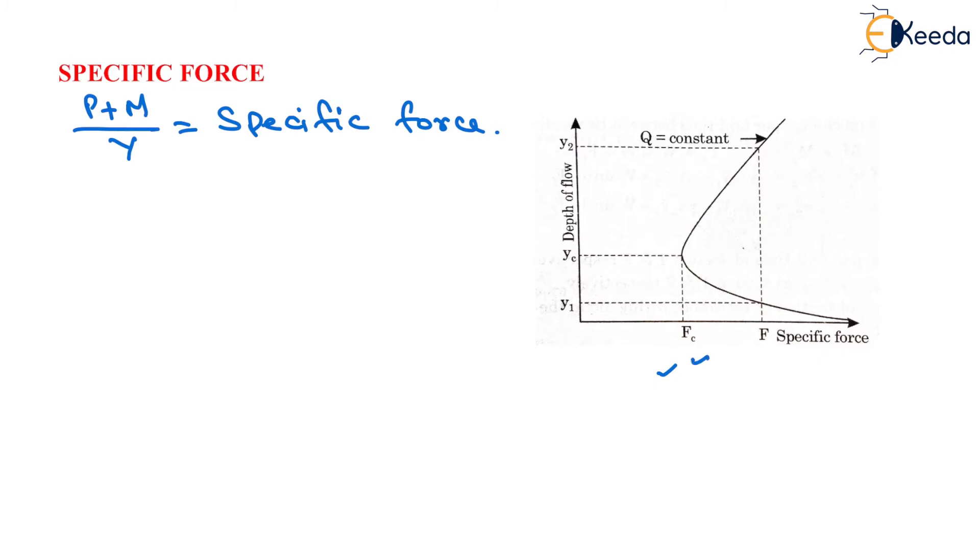At a value of F Fc, which is shown here, there are two depths of flow, that is Y1 and Y2, which yield the same specific force at the given discharge. These depths are called conjugate depth or sequent depth.